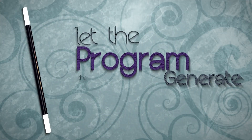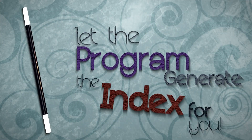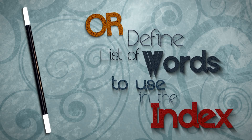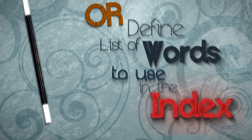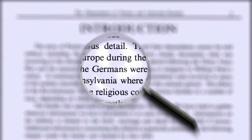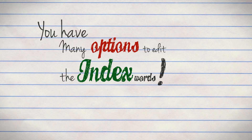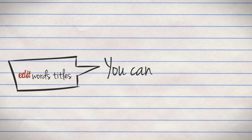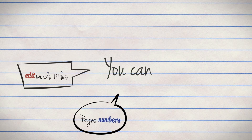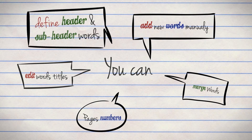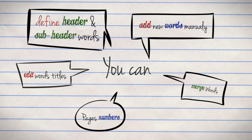You can let the program generate the index for you, or you can define a list of words to force the program to use in the index. The program will look for words and the page numbers they are found in. You have many options to edit the index words. You can edit word titles, page numbers, merge words, add new words manually, and define header and subheader words.